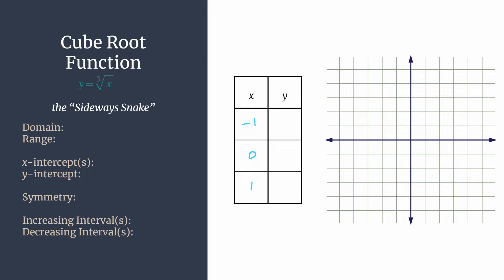So if we take the cube root of negative one, that's just negative one times negative one times negative one. So the cube root of negative one is just negative one. Similarly, cube root of zero is just zero, and cube root of one is one.